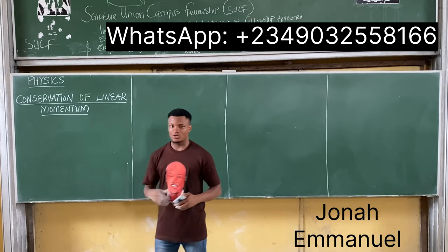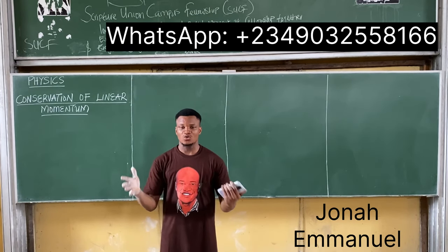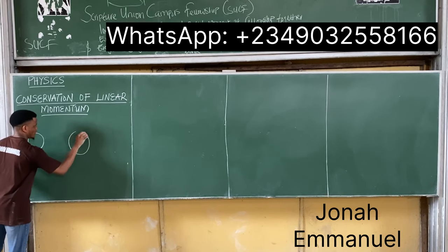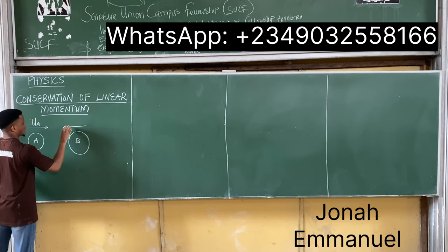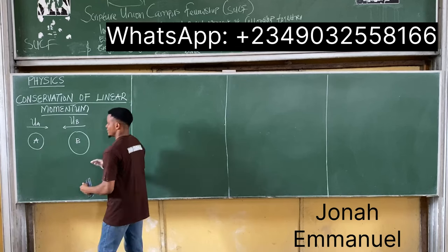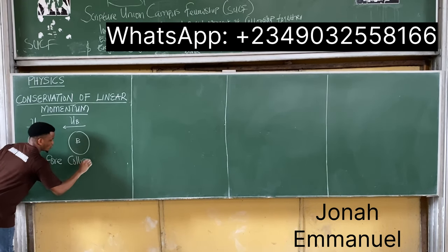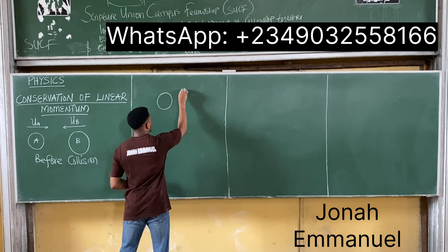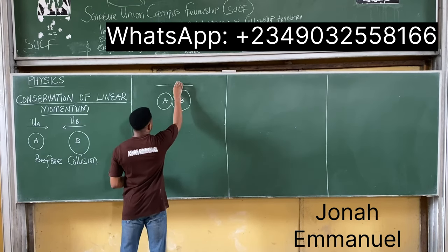Two bodies are said to collide if they hit against each other, usually in opposite directions. So let's say I have two bodies here — body A and body B. Body A is moving this way with a velocity of u_a, and body B moves in the opposite direction with velocity u_b. When they collide, this is what it looks like before collision.